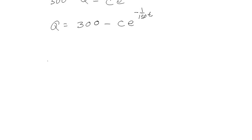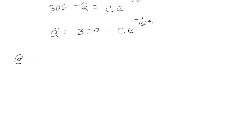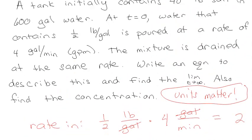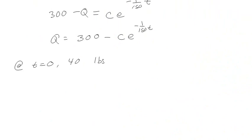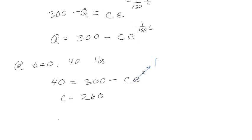Now I need to find C. It told me that at time equals 0, there was 40 pounds of salt in the tank. I'm using 40 pounds of salt because Q represents pounds of salt. So at t = 0, Q = 40. Plugging in: 40 = 300 - C·e^0, so C = 300 - 40 = 260.